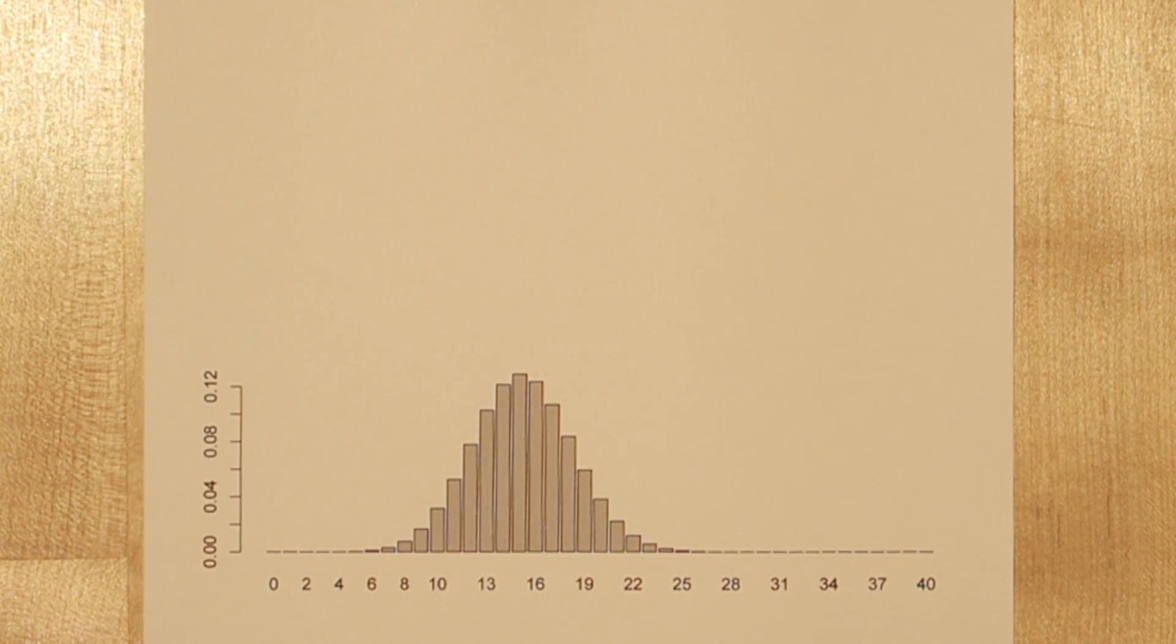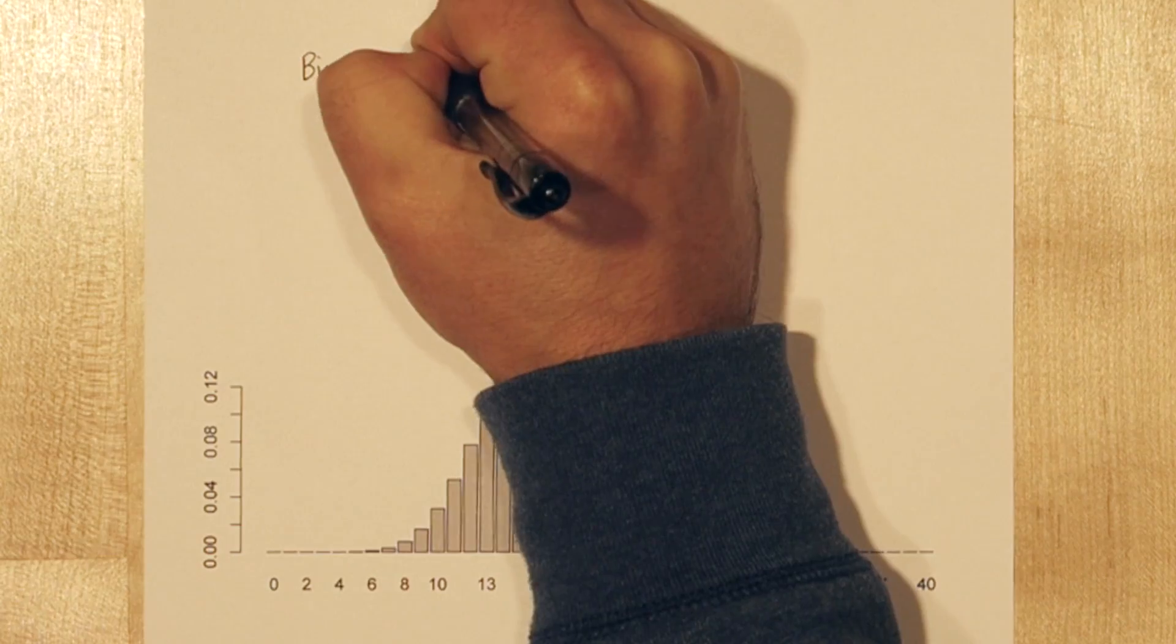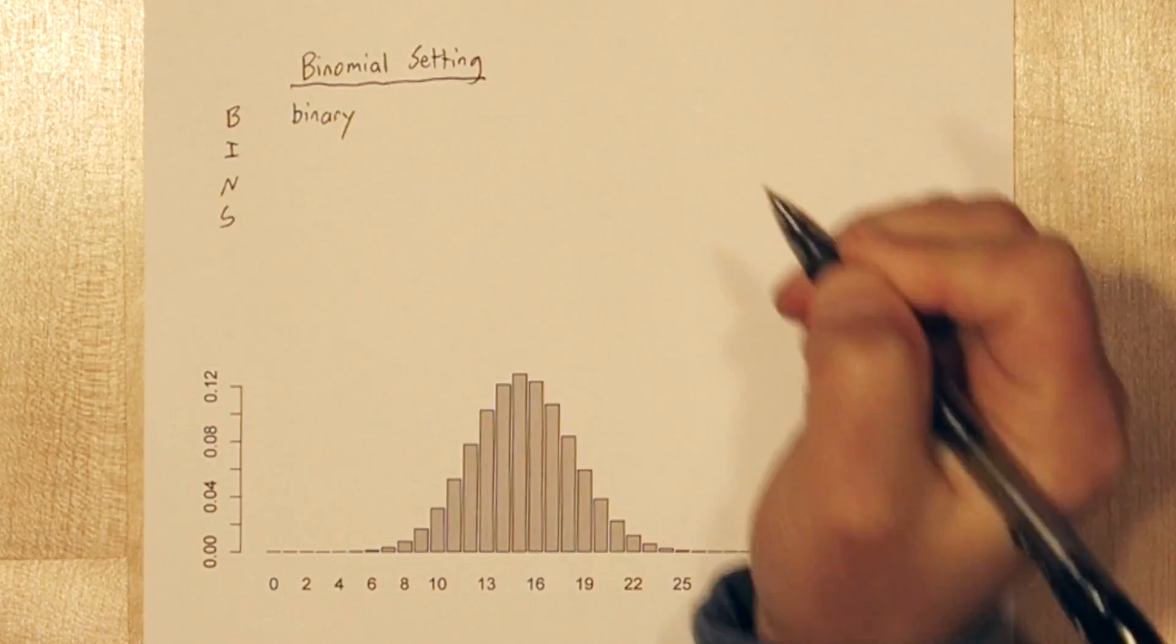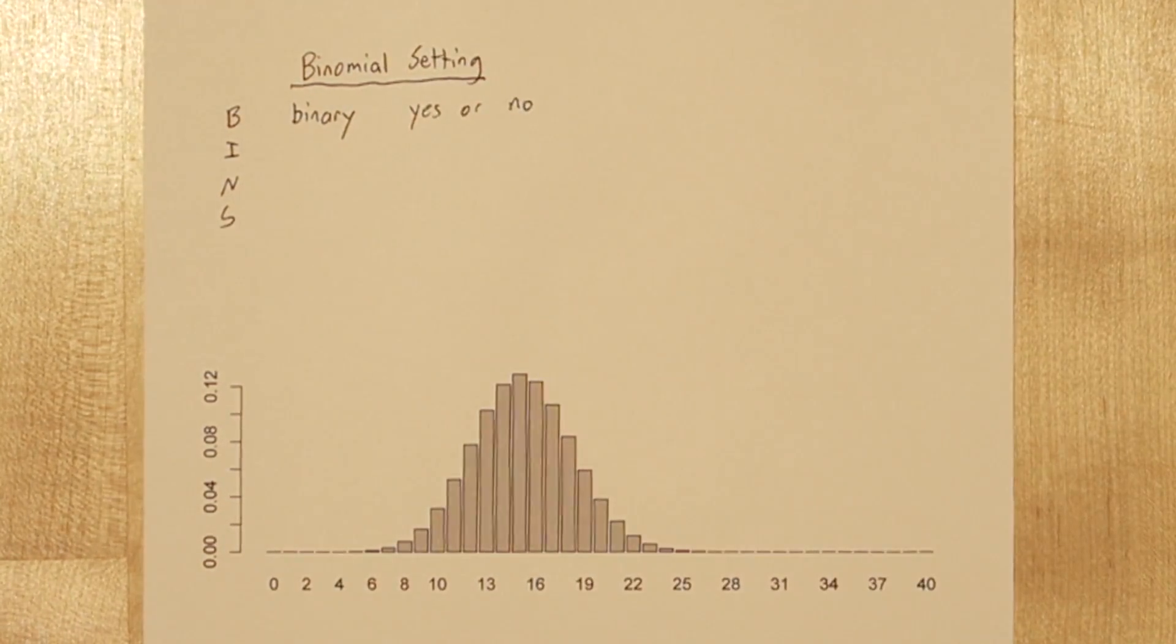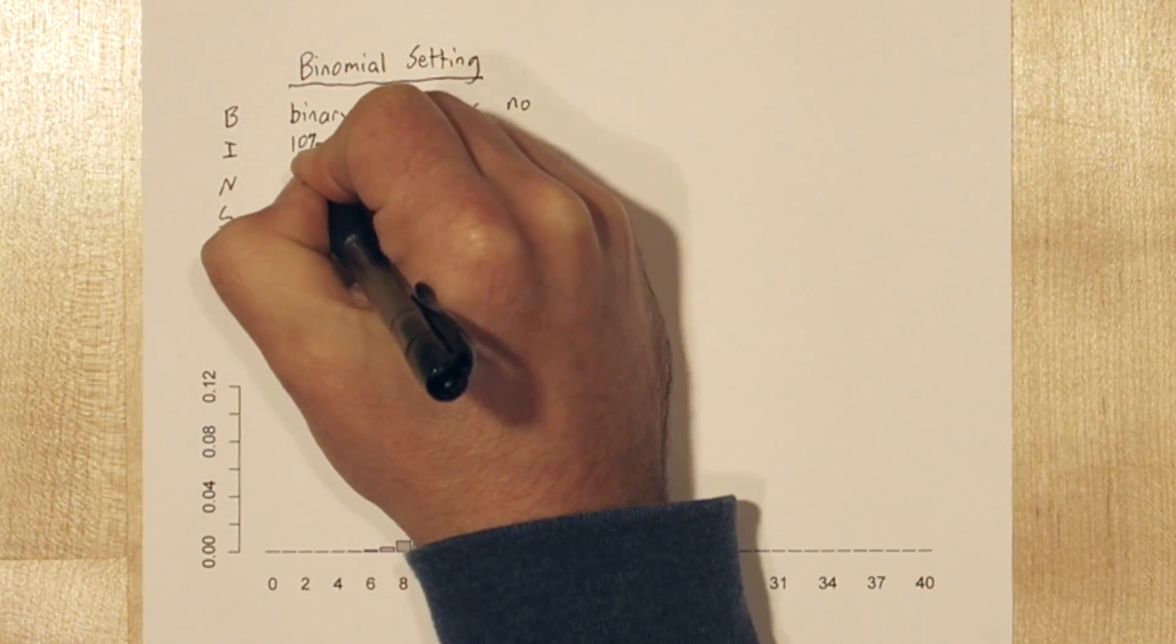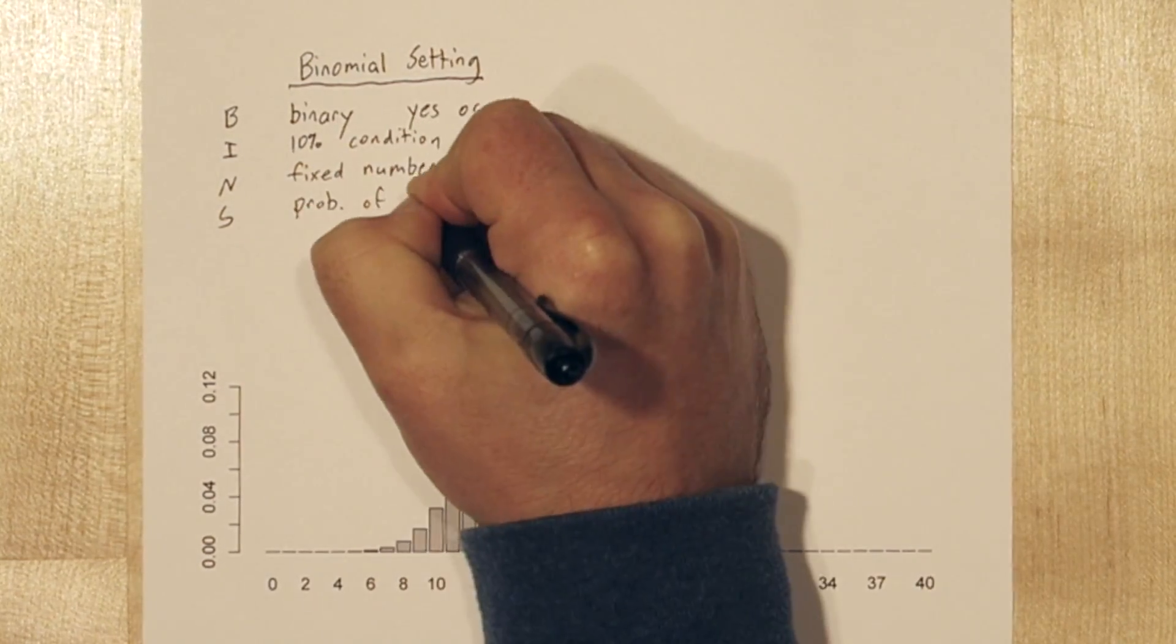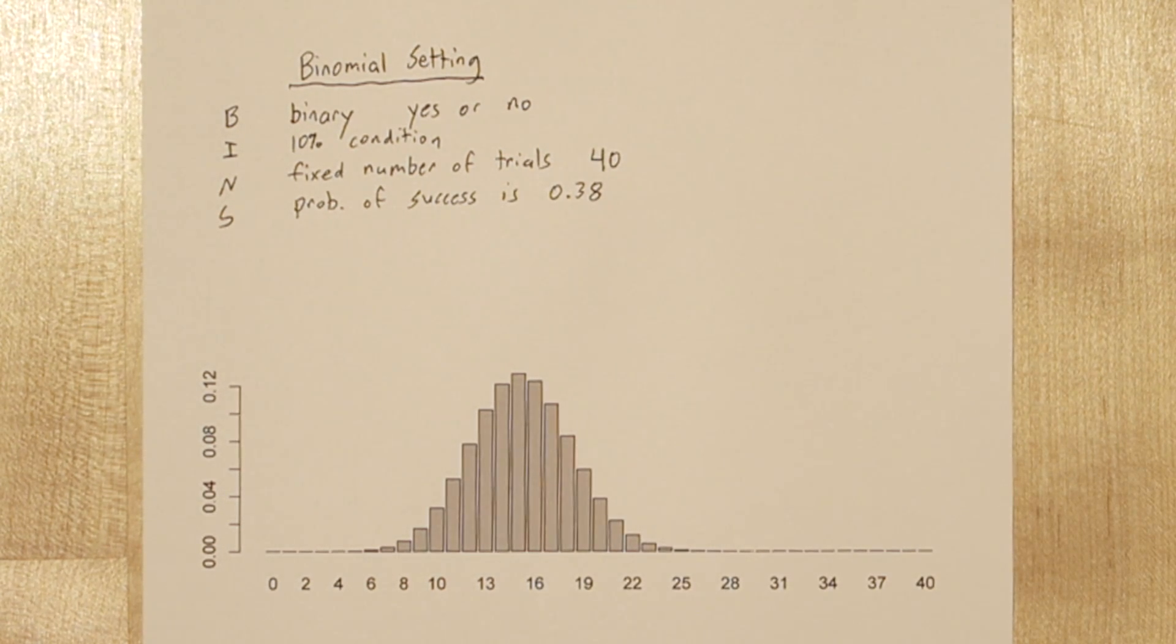But all of this was using the normal approximation to calculate this. It really follows a binomial setting. You can check this by using the acronym bins. It's binary because students can say yes or no they want a new mascot. It's independent because we already checked the 10% condition. There's a fixed number of trials because our sample size is fixed at 40, and the probability that any one of those people in the sample says yes is our parameter value, 0.38.